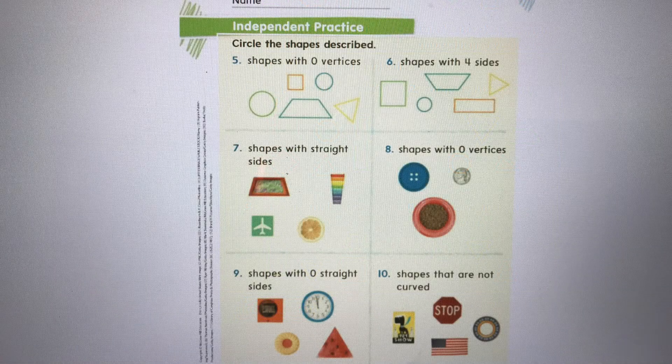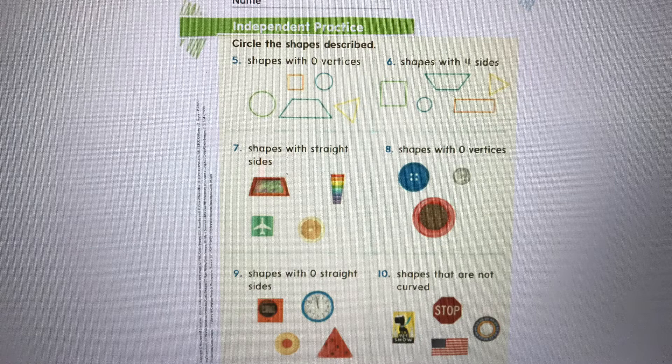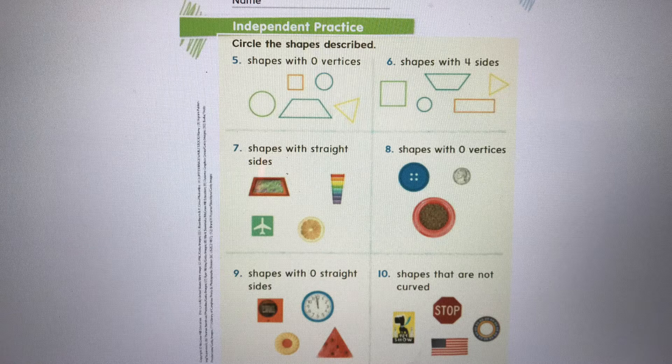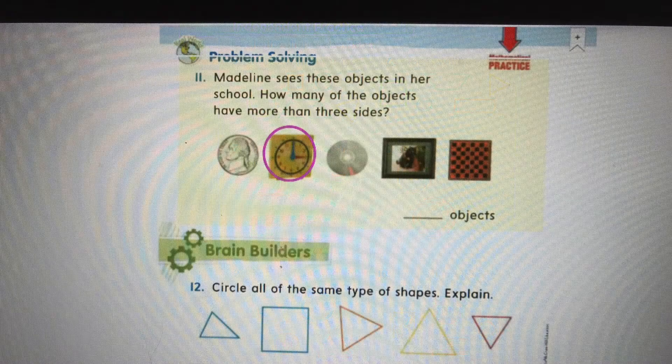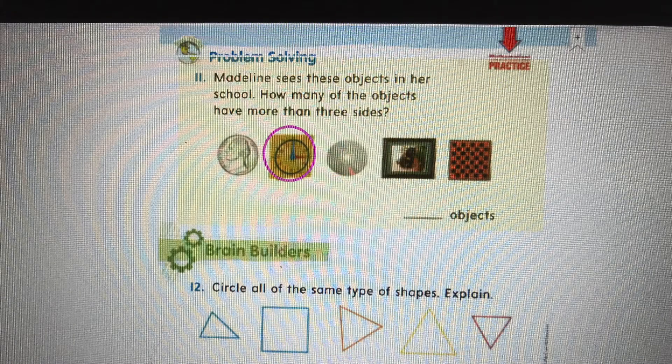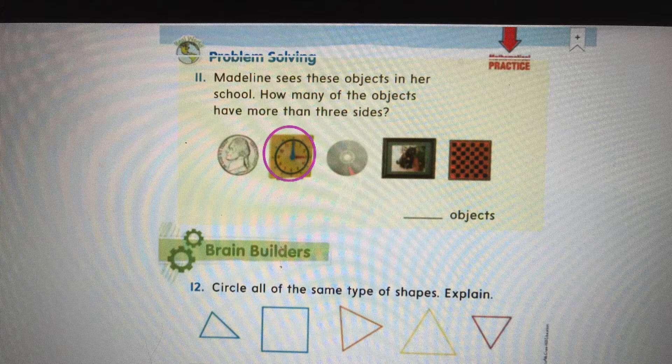Okay, it's independent practice time. I want you to circle the shapes that are described. So from problems five through ten, read the directions, and then circle the correct shapes that match for those directions. Problem 11. Madeline sees these objects in her school. How many of these objects have more than three sides? Well, if we look at this picture of a clock, it has a circle in the middle, but around it is a square, so it has more than three sides. Circle any of the objects that you see that have three sides, and write the number of objects on the line.